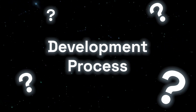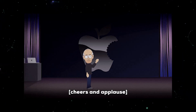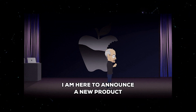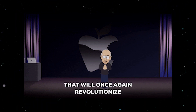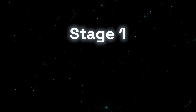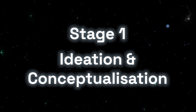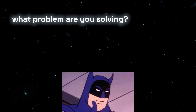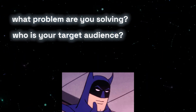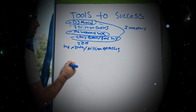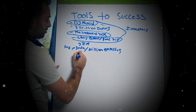Now we understand the characteristics of what makes a good MVP. But what does the development process look like? The development of an MVP is not just about building a product — it's about learning, adapting, and finding the most efficient path to solve a problem. Here is a seven-stage process. Stage one: ideation and conceptualization. This is where it all starts. You brainstorm and refine your idea. What problem are you solving? Who is your target audience? This phase is about defining your vision and setting clear goals for what your MVP will achieve.